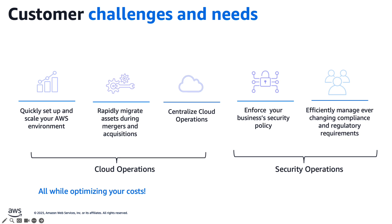Customers migrating to AWS need to move workloads from on-premises environments, hosting facilities, or other cloud providers securely and efficiently. During business transitions such as M&A and divestitures, customers need to rapidly migrate assets while ensuring efficient, secure, and compliant transitions. They want centralized network management — not having each account owner spin off their own VPC — as well as centralized security operations to enforce security controls and abide by specific regulatory requirements.